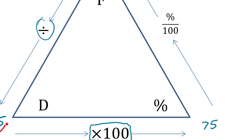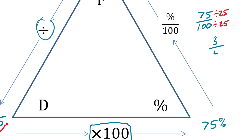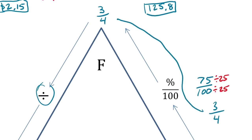Now we have 75%. To get from that back to a fraction, take 75 and divide it by 100. Instead of plugging it into a calculator — which would just give a decimal — we reduce the fraction. Both 75 and 100 are divisible by 25: 75 ÷ 25 = 3, and 100 ÷ 25 = 4. So we get back to three-fourths. Whatever you start with, just follow this triangle and it'll get you where you need to go.